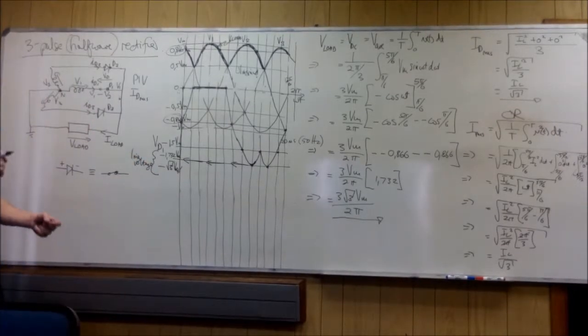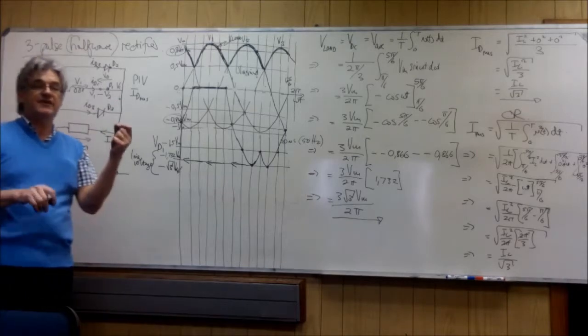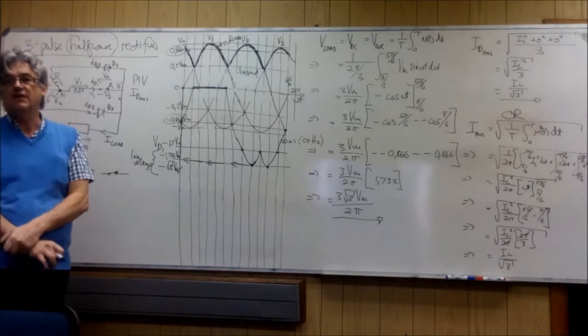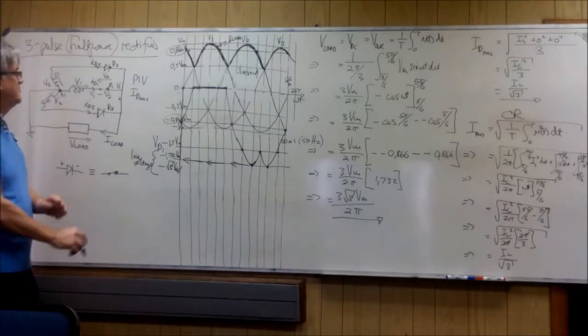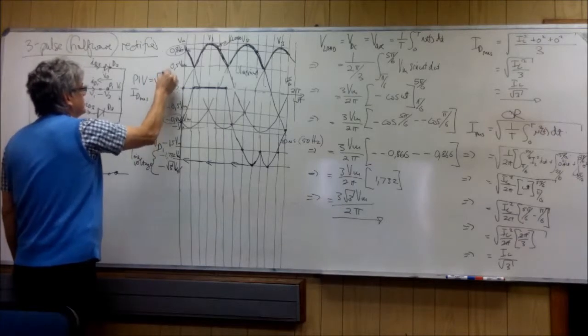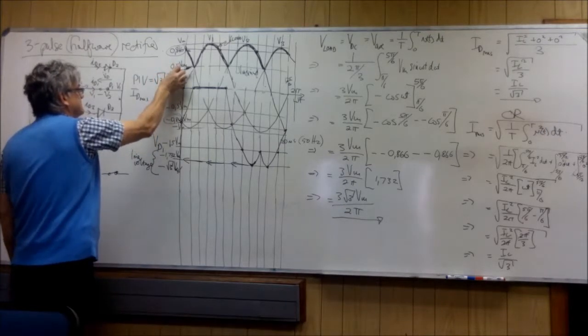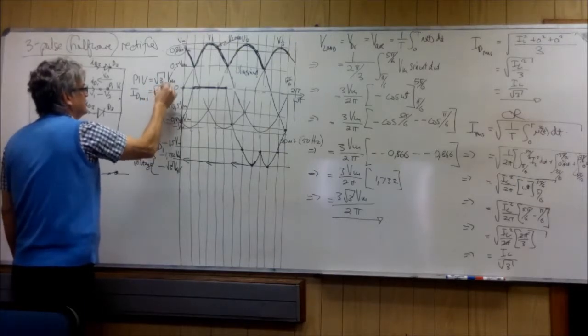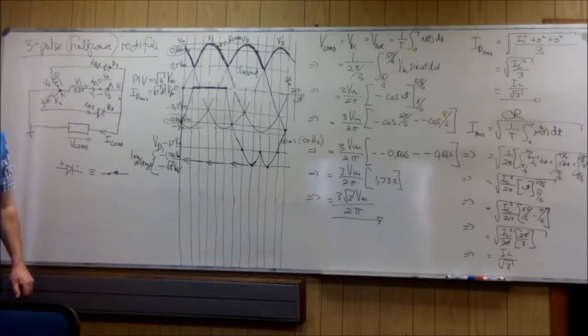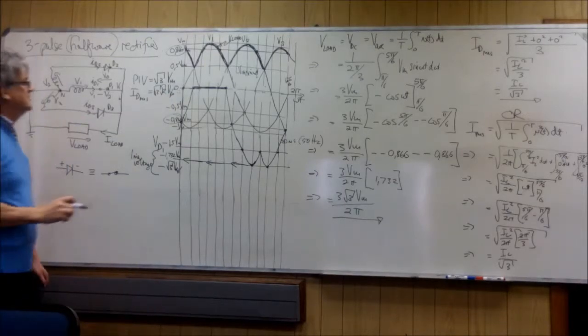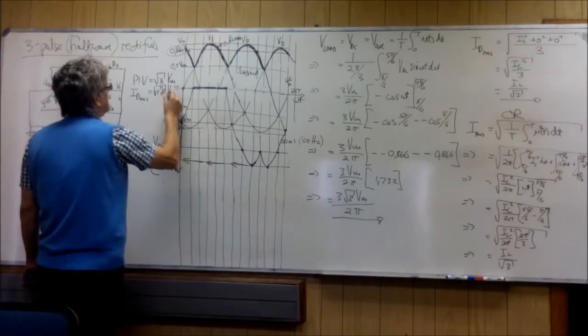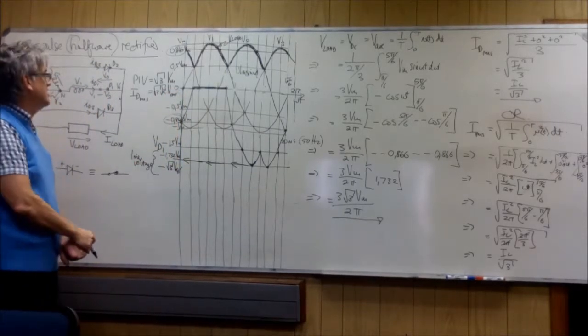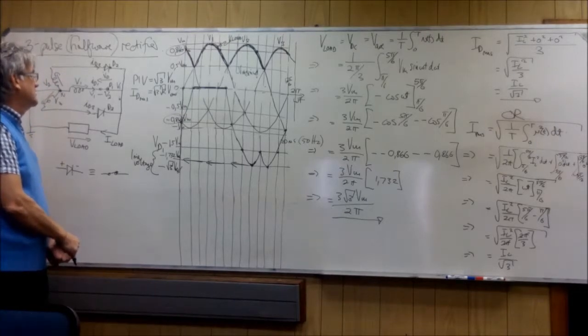And the line voltage, the ratio between a single phase and a three phase, or a phase voltage and a line voltage, is the square root of 3. So there you are, so the peak inverse voltage is square root of 3 Vmax, is equal to the square root of 3 times the square root of 2 times Vphase Vrms. Sorry, I should not have put that word in there, okay?